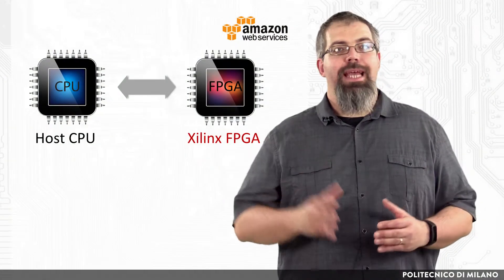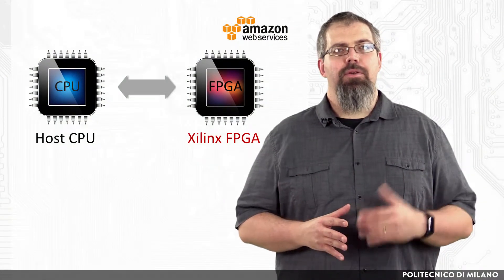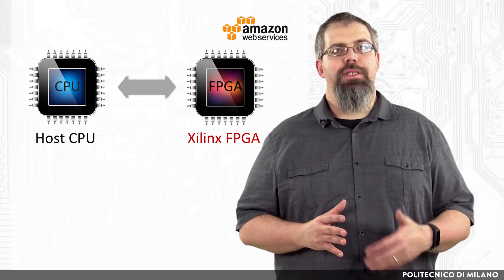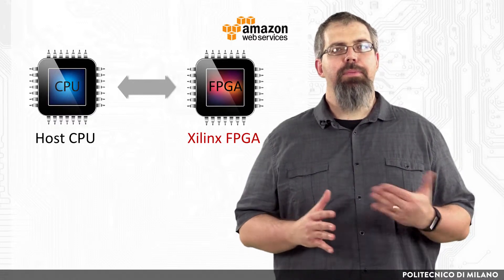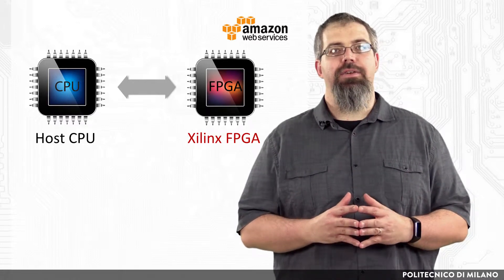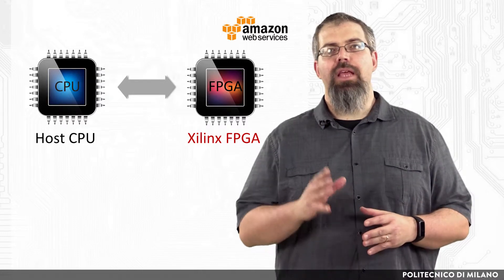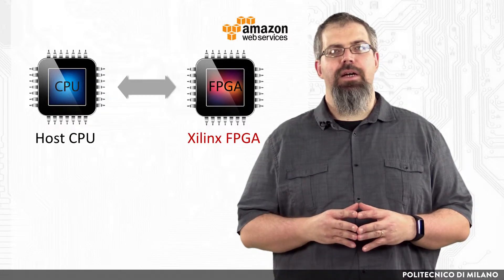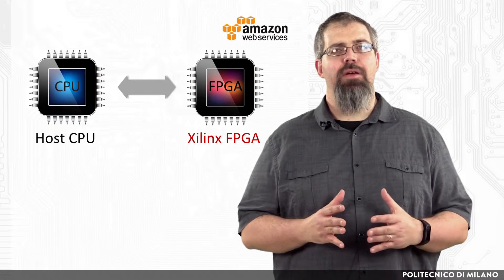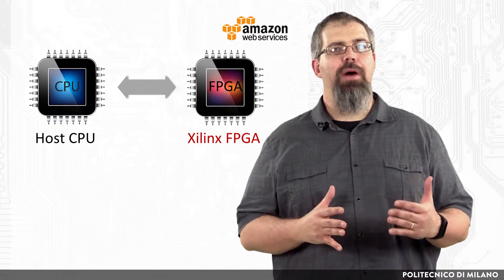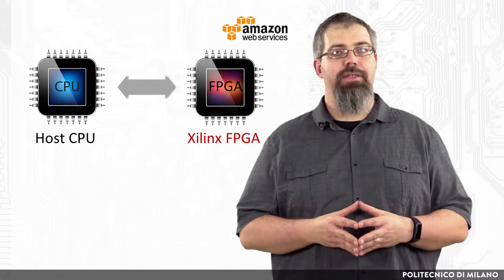As we know, the Amazon EC2 F1 instances are compute instances with Xilinx FPGAs which can be programmed to create custom hardware accelerated applications. The F1 instances are easy to program and come with everything needed to develop, simulate, debug and compile hardware accelerators.